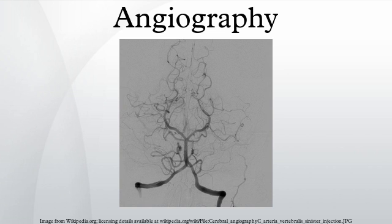Technique: depending on the type of angiogram, access to the blood vessels is gained most commonly through the femoral artery to look at the left side of the heart and at the arterial system, or the jugular or femoral vein to look at the right side of the heart and at the venous system. Using a system of guide wires and catheters, a type of contrast agent is added to the blood to make it visible on the X-ray images.